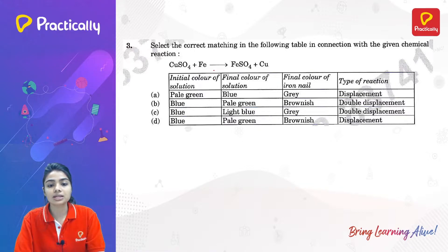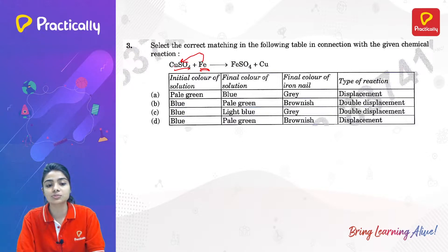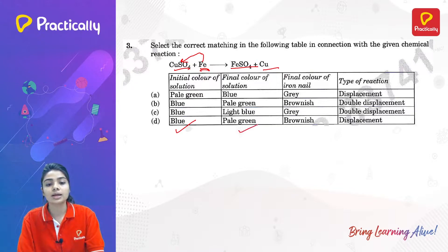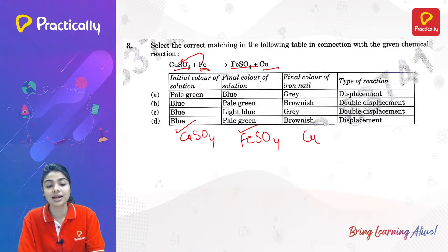CuSO₄ + Fe → FeSO₄ + Cu. Copper sulfate is blue in color; iron is a more reactive metal than copper, so it displaces copper, forming iron sulfate plus copper. The solution changes from blue (CuSO₄) to pale green (FeSO₄), and brownish copper is deposited. This is a displacement reaction where a highly reactive metal displaces a lower reactive metal.